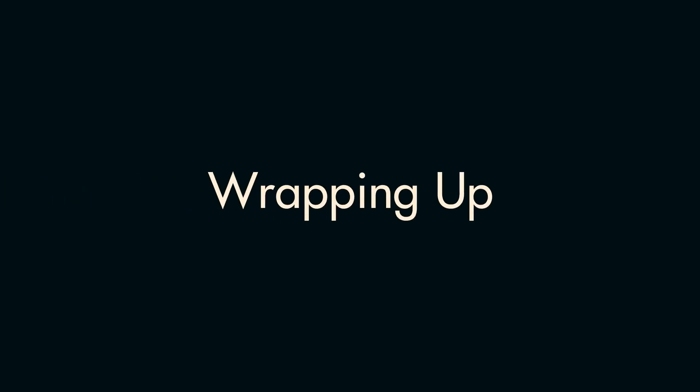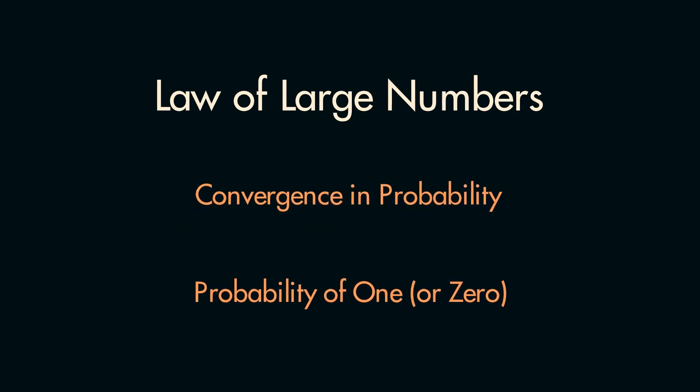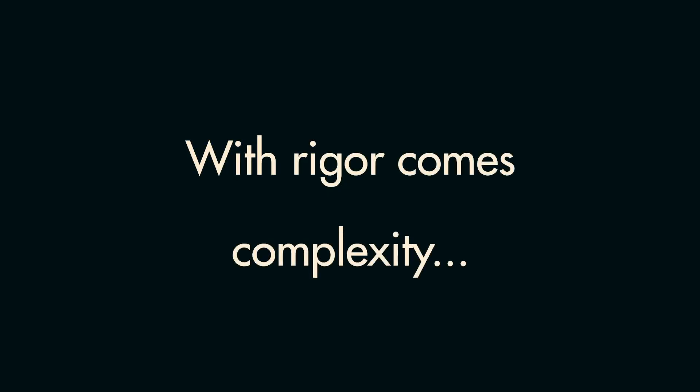With that, you now have a fairly rigorous understanding of the law of large numbers and its two primary versions. In this video, we also covered what it means for something to converge in probability, and what it means for something to have a probability of 0 or 1. While the differences between both laws seem fairly minute, and in practice they essentially are, it does still reveal a lot of the extra complexity that comes with making something mathematically rigorous.